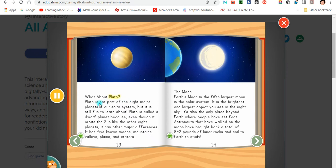What about Pluto? Pluto is not part of the eight major planets in our solar system, but it is still fun to learn about. Pluto is called a dwarf planet because, even though it orbits the sun like the other eight planets, it has other major differences. It has five known moons, mountains, valleys, plains, and craters.